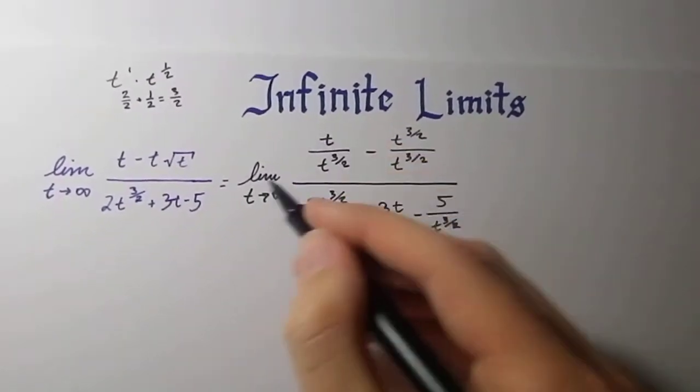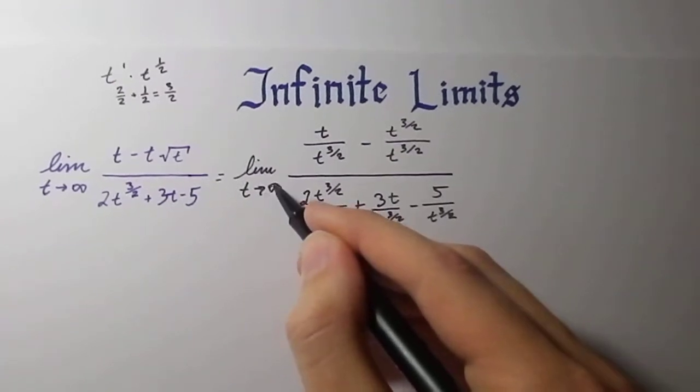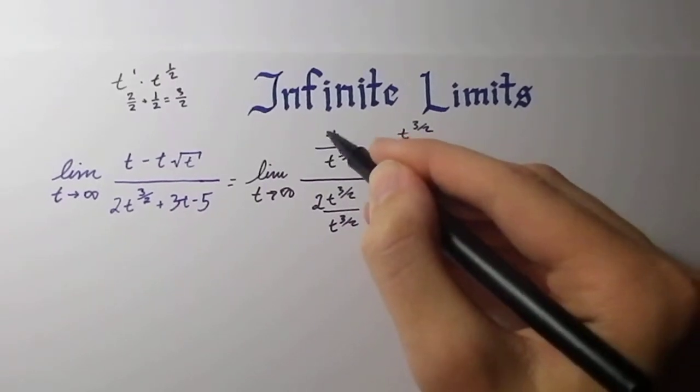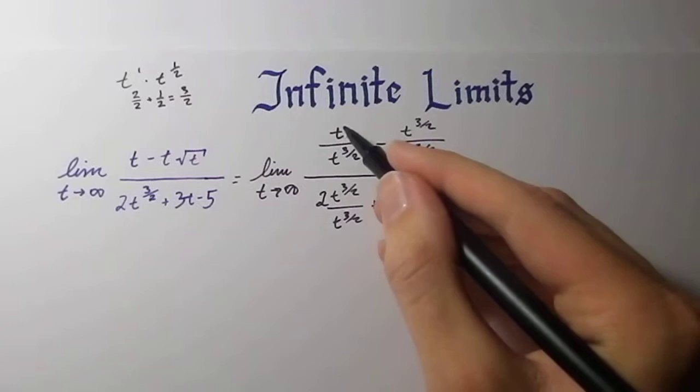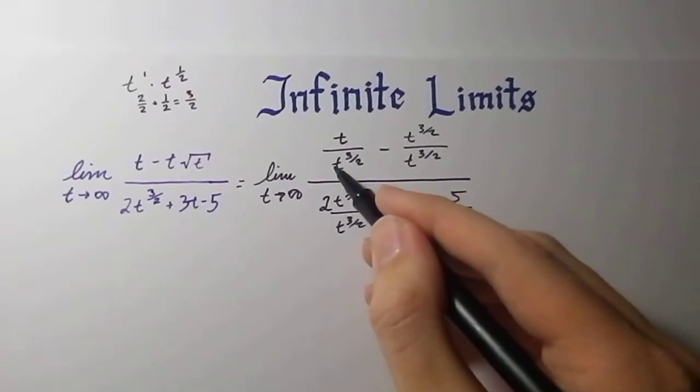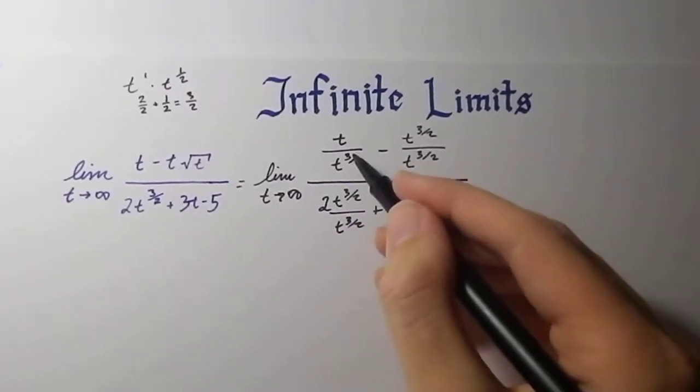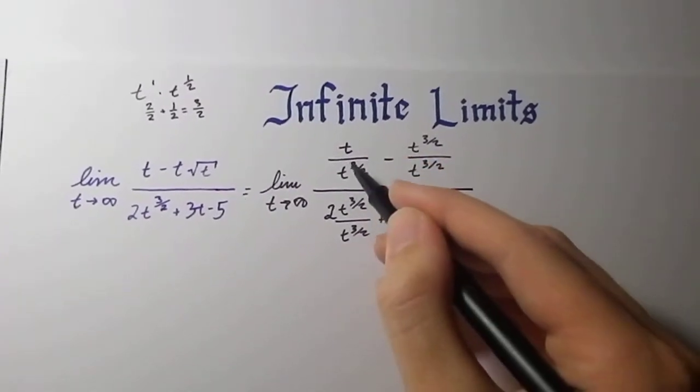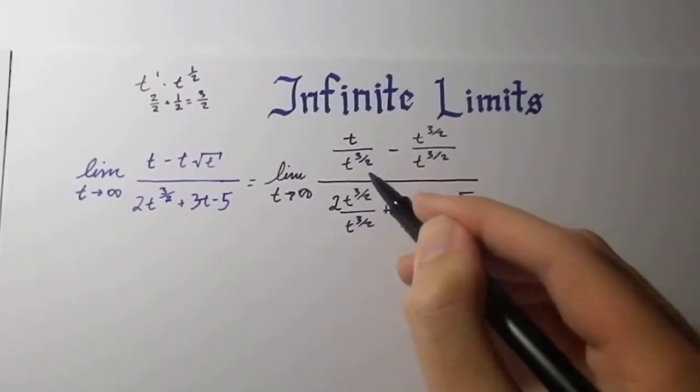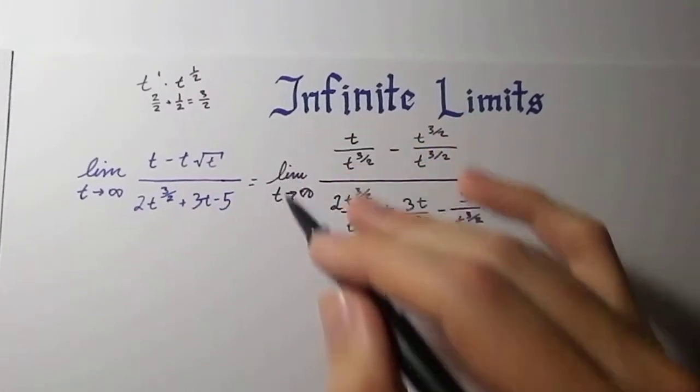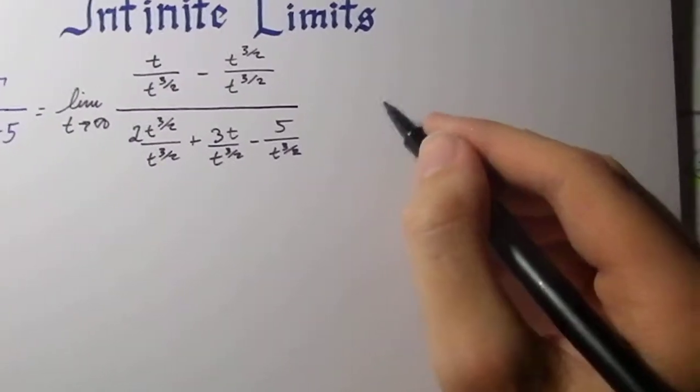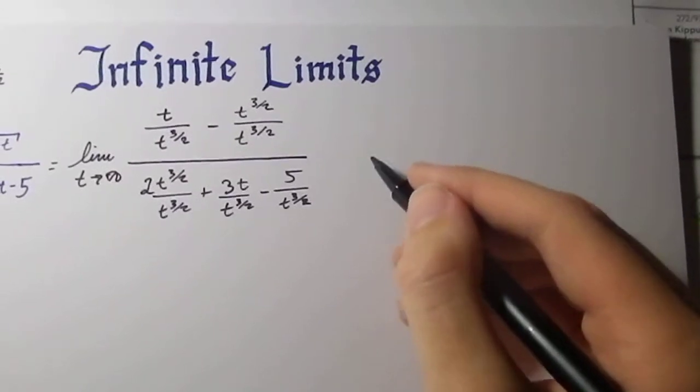So let's take each term one by one. What happens as the limit of this as t approaches infinity? Well, notice that as t approaches infinity, t is going to approach infinity in the numerator. So this is getting larger and larger. But t raised to 3 halves is getting larger faster or bigger because this is t to the first and this is t raised to 1.5, and 1.5 is greater than 1.0. So it's going to get closer to infinity faster than t can. So let's do a simple way to wrap our heads around that.